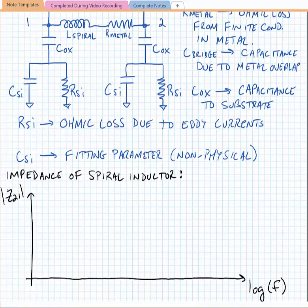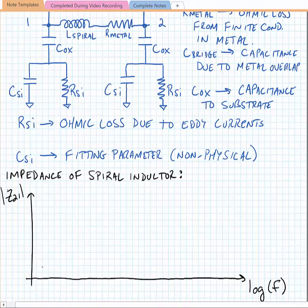If we examine the impedance of the spiral inductor at low frequencies, the structure behaves like an inductor. That is, the impedance increases at 20 dBs per decade. And here we have L-spiral dominating.